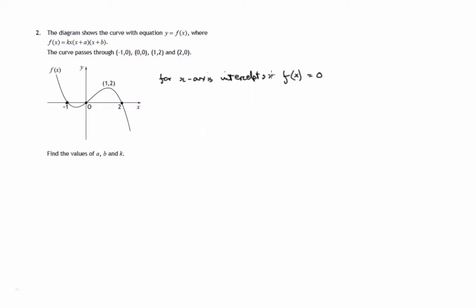So we set f(x) equal to 0. That means in this case kx times x plus a times x plus b must equal 0. So we have three or four factors multiplied together to give you 0, so one of them must be 0.